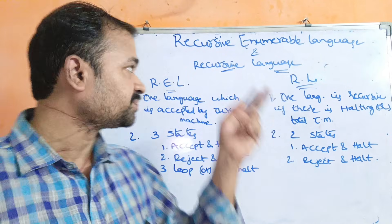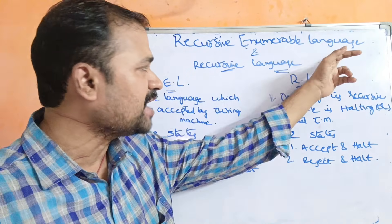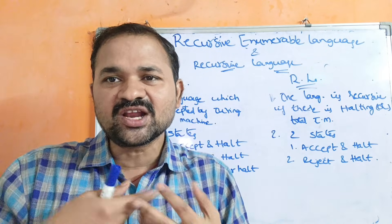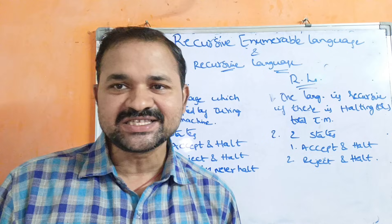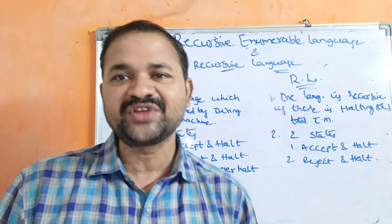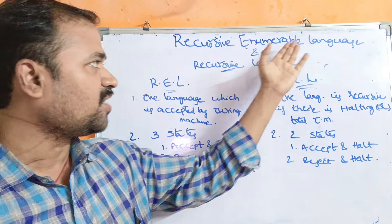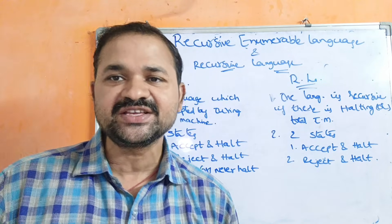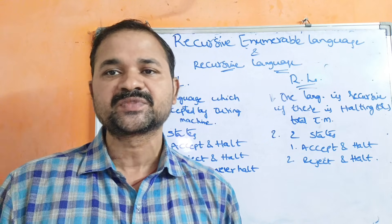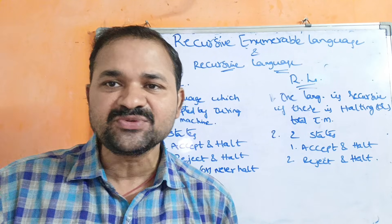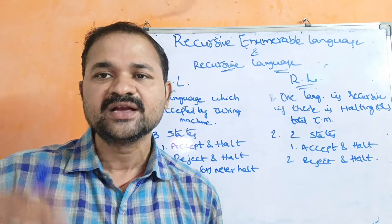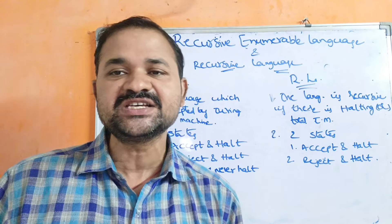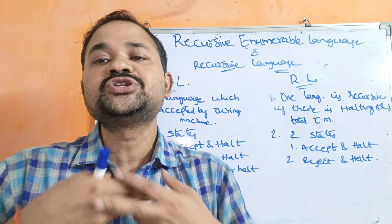Now let us discuss recursive enumerable language and recursive language. We have regular languages, context sensitive languages, and context free languages. Likewise we have REL and RL also. We know that regular languages are accepted by finite automata, whereas context sensitive languages are accepted by linear bounded automata, and context free languages are accepted by pushdown automata.